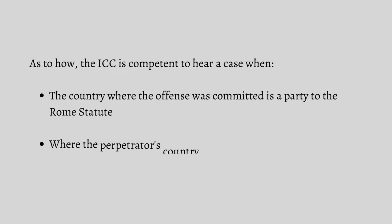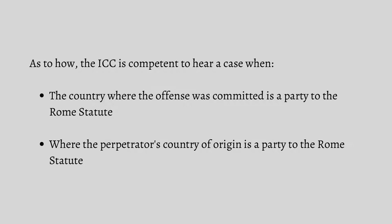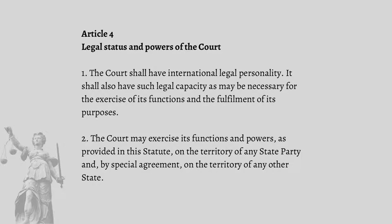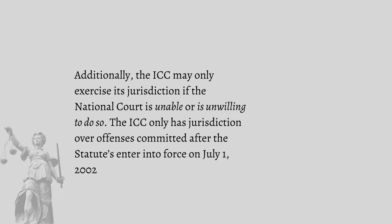As to how the ICC acquires jurisdiction, it is manifested under Article 4, which tells us that the court is competent to hear a case when: first, the country where the offense was committed is a party to the Rome Statute; or second, the perpetrator's country of origin is a party to the Rome Statute. Article 4 reads: the court shall have international legal personality and such legal capacity as may be necessary for the exercise of its functions and the fulfillment of its purposes. The court may exercise its functions and powers on the territory of any state party and by special agreement on the territory of any other state. Additionally, the ICC may only exercise its jurisdiction if the national court is unable or unwilling to do so. The ICC only has jurisdiction over offenses committed after the statute's entry into force on July 1, 2002.